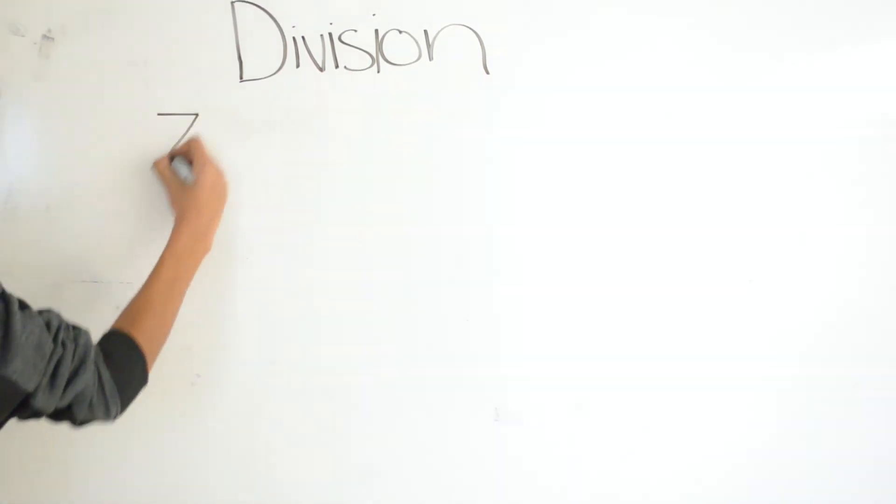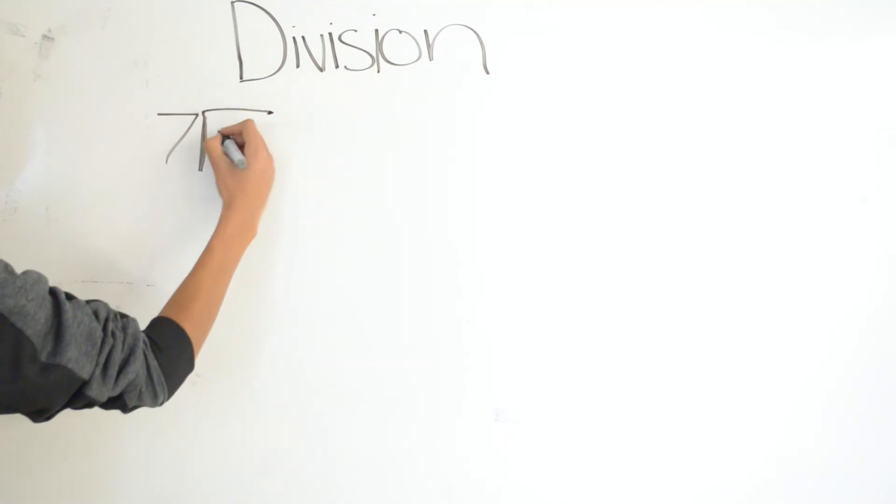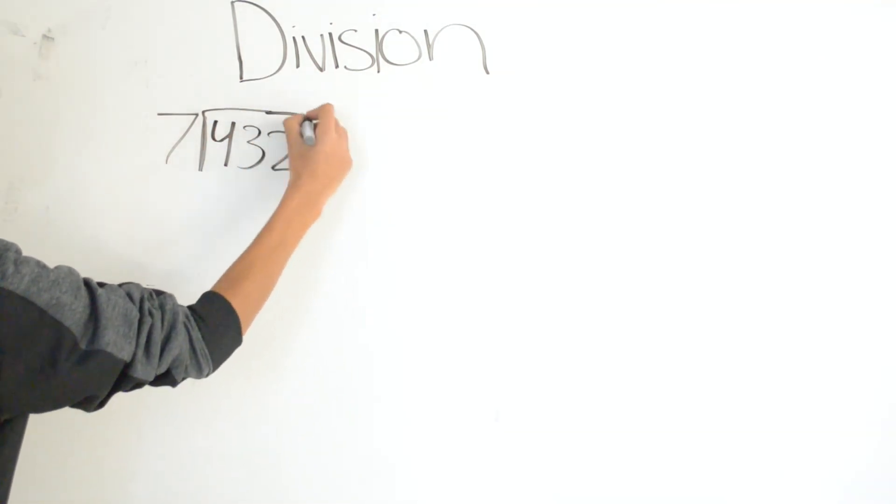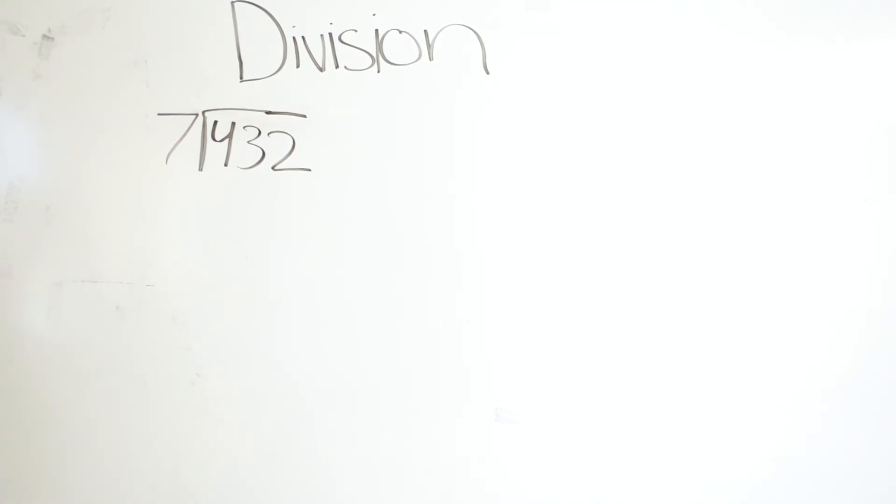For our last example for division, we have 7 divided by 432. The 7 is our divisor and 432 is our dividend.